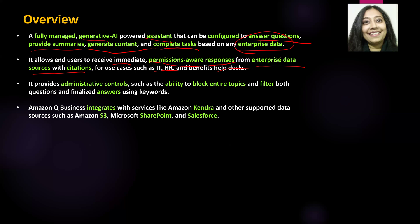Amazon Q Business also provides administrative controls, such as the ability to block entire topics or filter both questions and finalized answers using certain keywords. It integrates with Amazon Kendra, Amazon S3, Microsoft SharePoint, and Salesforce.